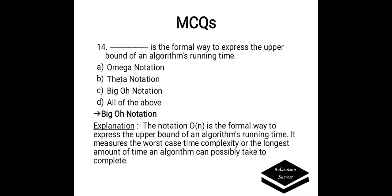Dash is the formal way to express the upper bound of an algorithm's running time. Options: a) omega notation, b) theta notation, c) big-O notation, or d) all of the above. Correct answer is big-O notation. Big-O notation is the formal way to express the upper bound of an algorithm's running time. It measures the worst case time complexity — the longest amount of time an algorithm can possibly take to complete.